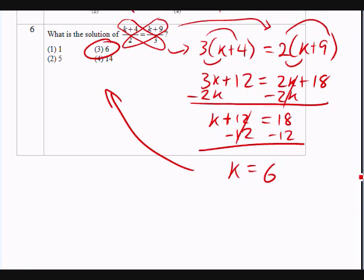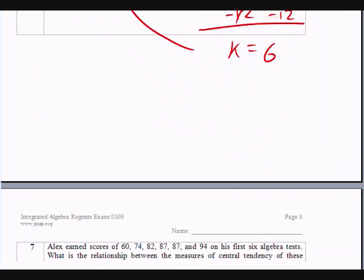Another way you can do it is take the different multiple choices here, plug it in for k into the equation, and see which choice will give you an equivalence. And choice 3 will also be the answer. Moving down, question 7.